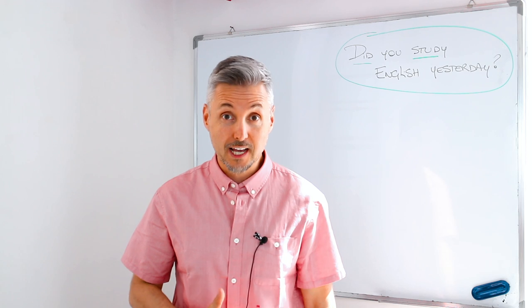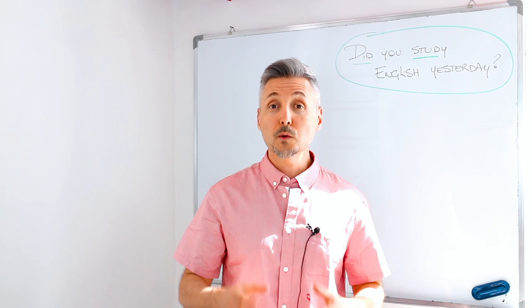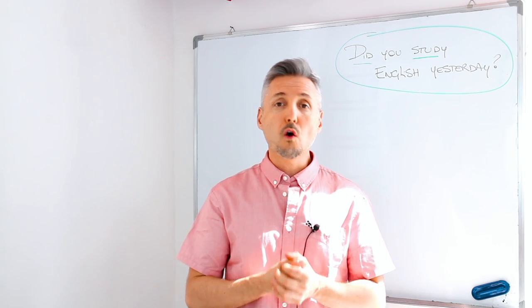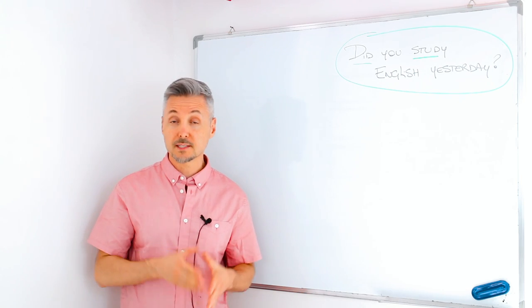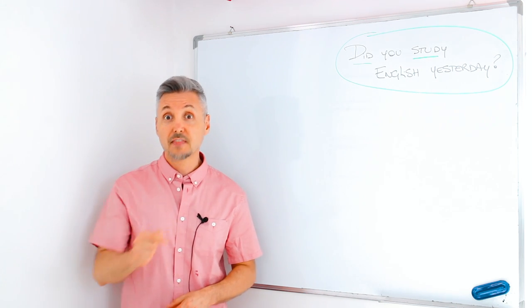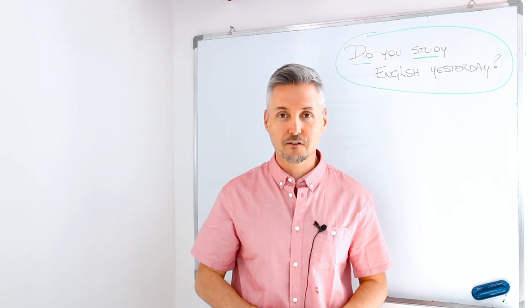Now let's recap. In this video we learned the past simple. We use the auxiliary did for making questions or for negative sentences. We use the past simple for single or repeated actions. And you know when they happened. Do not forget to learn the regular and irregular verbs.